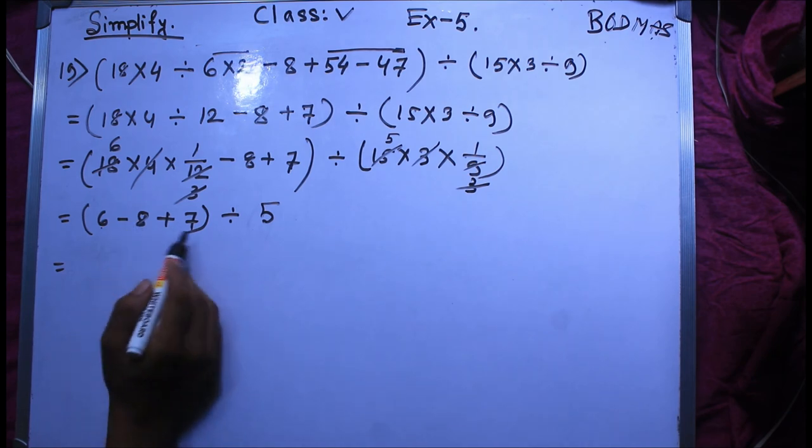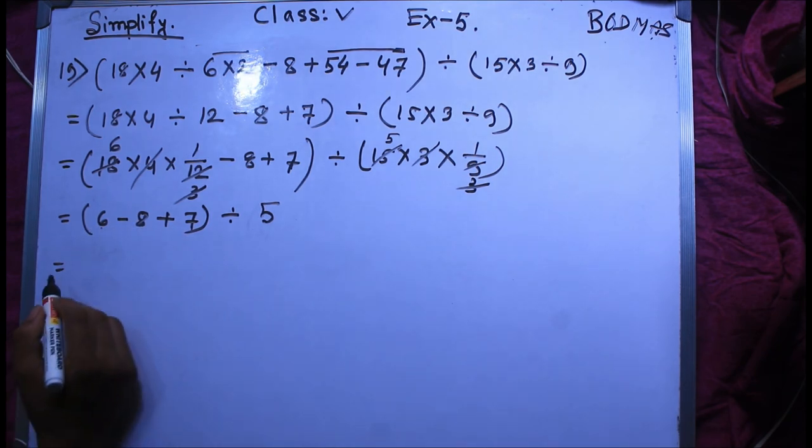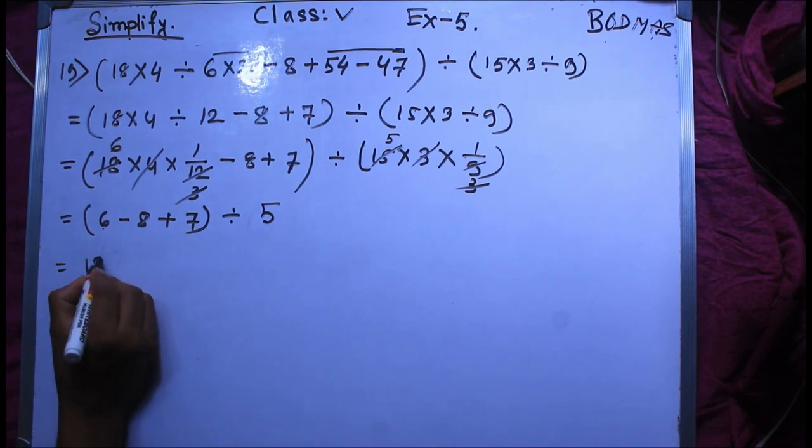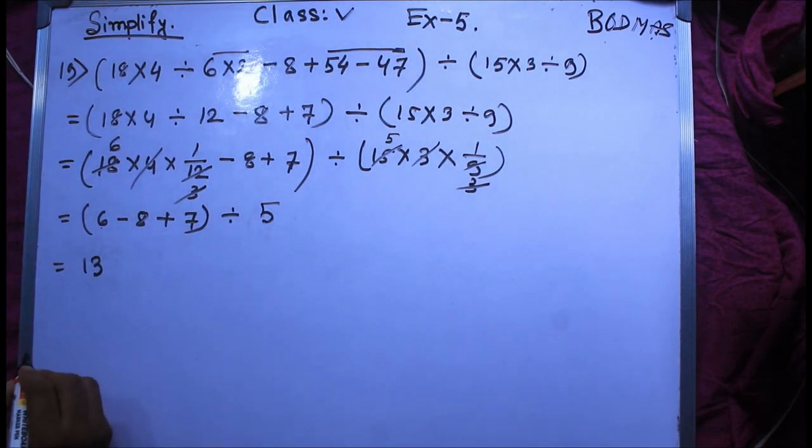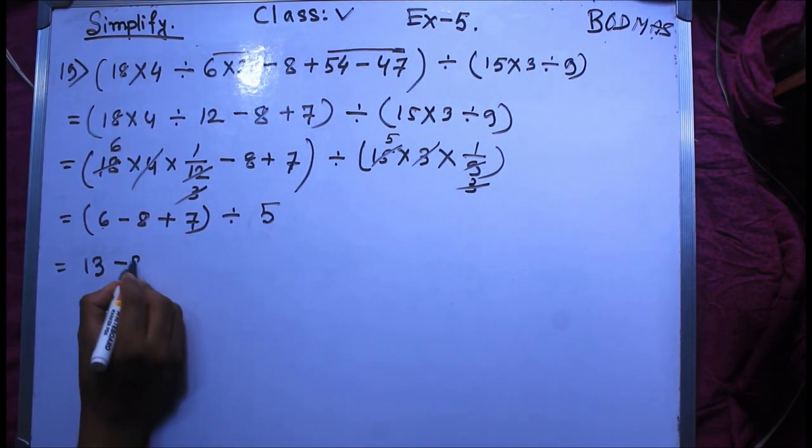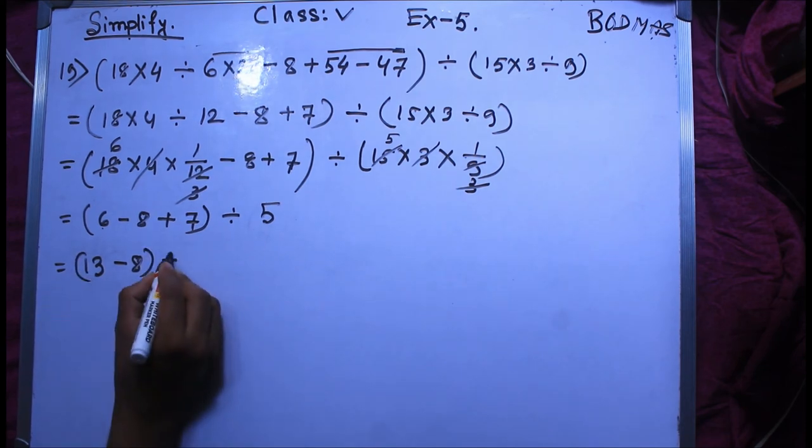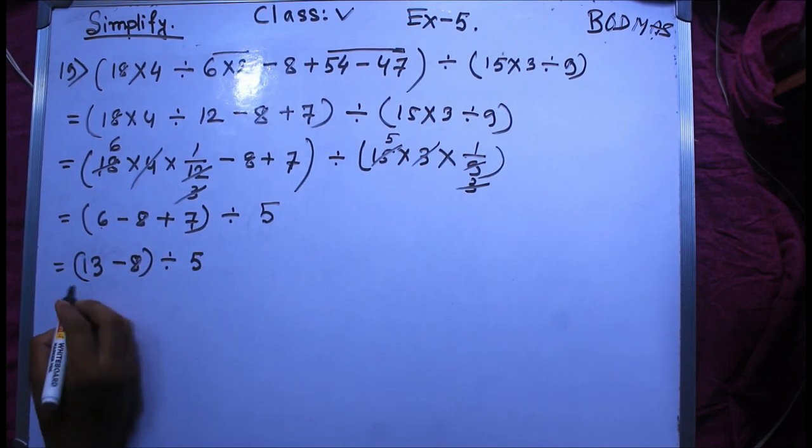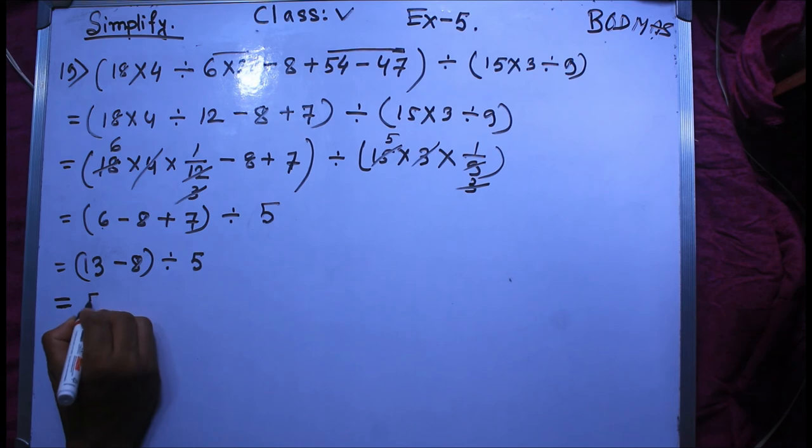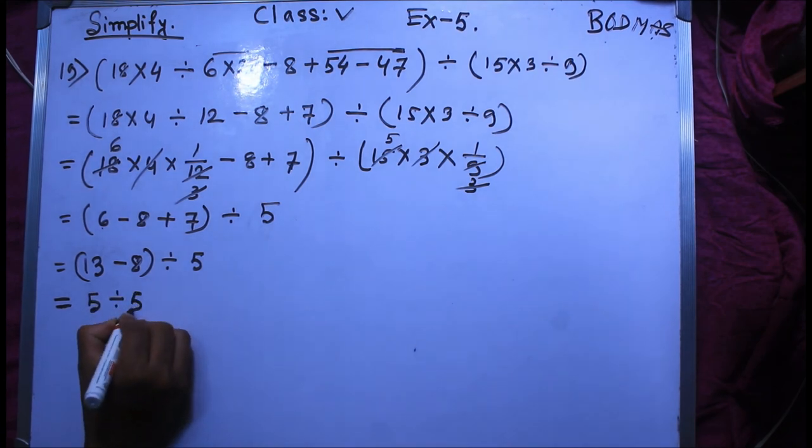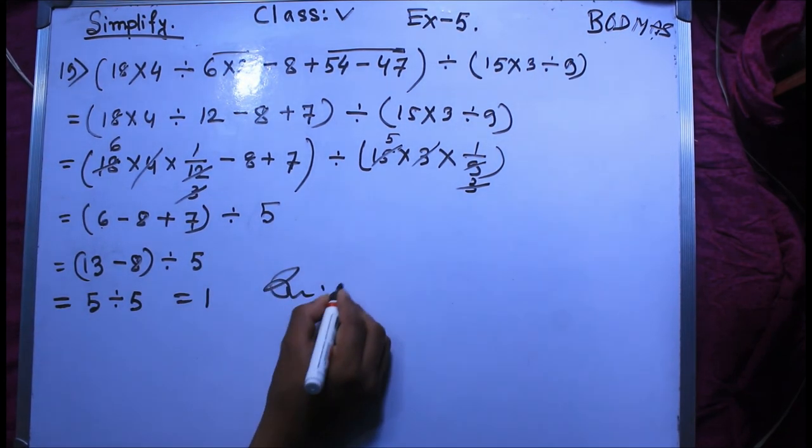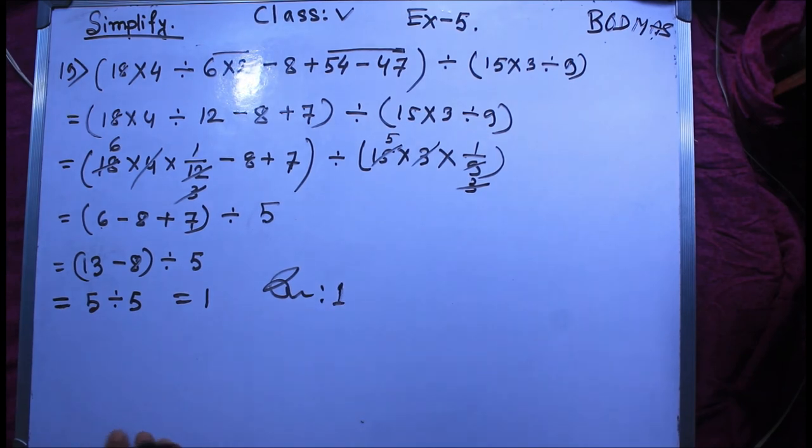This side is greater, so 5 divided by 5 equal to 1. And so 1. Okay, I'll show you how much time I'll show you.